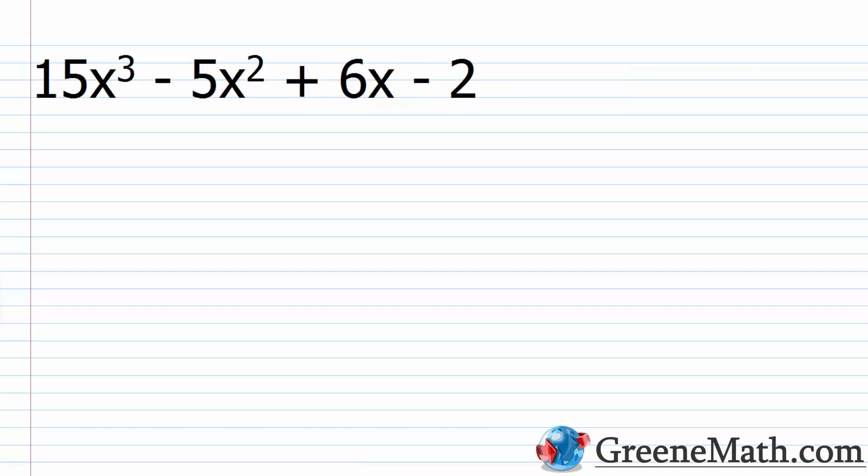In this lesson, we want to review factoring by grouping. Most of you know how to factor using the grouping method. This is basically something we use with a four-term polynomial. We're going to separate the four-term polynomial into two groups of two terms each. From each group, we pull out the GCF, or in some cases the negative GCF. Then we look for a common binomial factor, pull that out, and we will have factored our four-term polynomial using grouping.